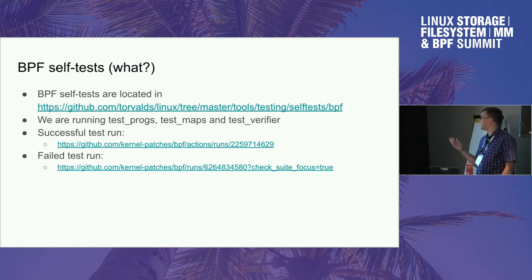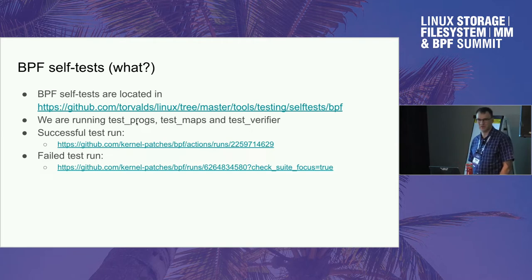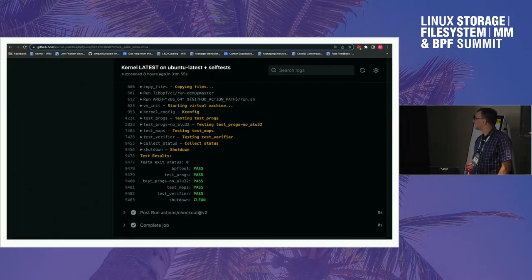We run a regular BPF self-test. In particular, we run test_progs, test_maps, and test_verifier. We run two flavors of test_progs — one is regular and one is no-ALU32. This is an example of a successful run: four tests executed, all passing.